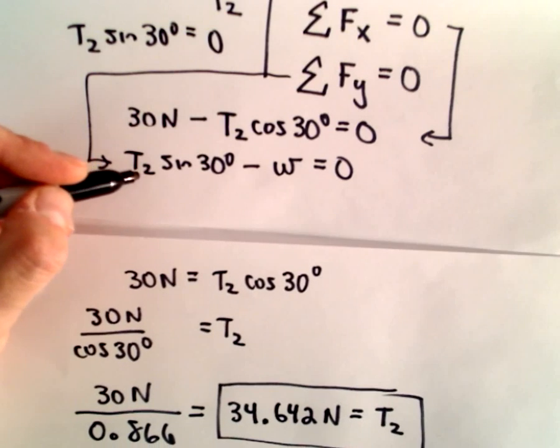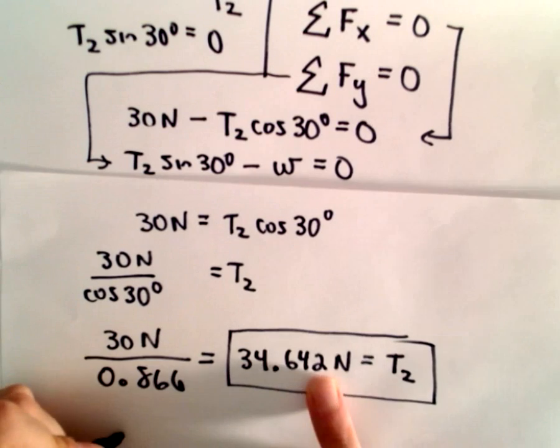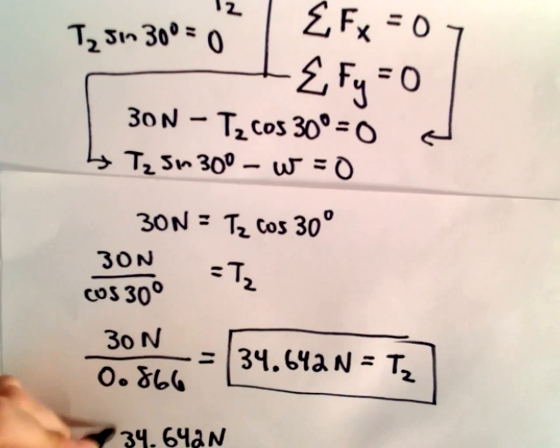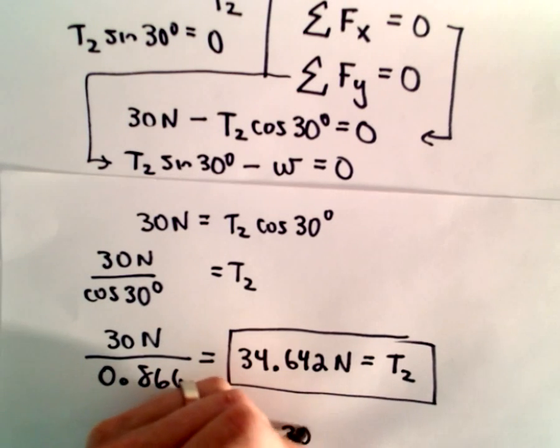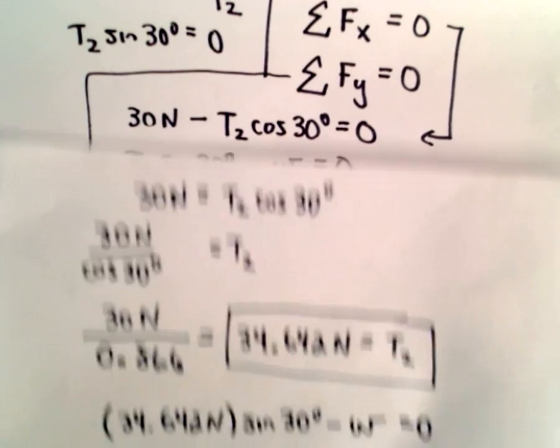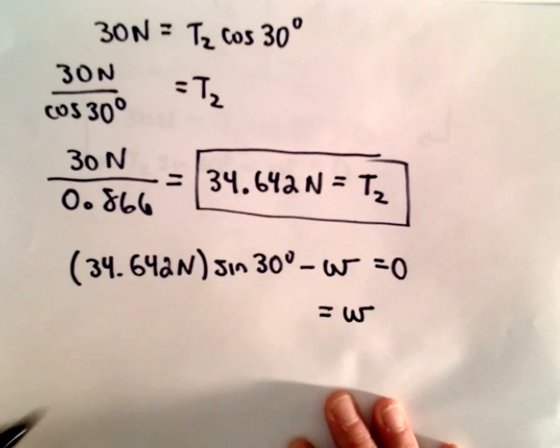Now all I'm going to do is simply substitute that value into our second equation. So we have T2, which is 34.642 newtons, times sine of 30 degrees, minus w, that's going to equal 0. So now I'll do a couple steps at once. Well, we can add w to both sides.